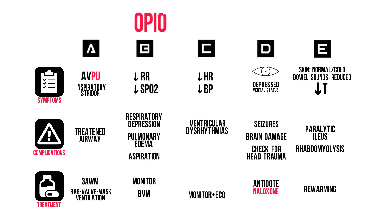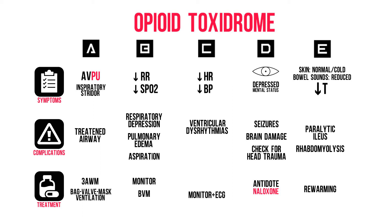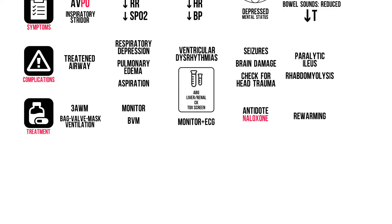Beware of transcellular shifts of potassium when you do so. Through our ABCDE assessment, we figured out that this is an opioid toxidrome. All vitals are downregulated, and the patient has pinpoint pupils. We can thus anticipate for possible complications, like respiratory depression and brain damage. We should therefore get the appropriate blood work: an arterial blood gas, liver and renal panel with electrolytes, CK, etc. Don't forget the tox urine. We've also already started the appropriate supportive treatment, providing respiratory support and rewarming the patient. Move on to risk assessment — can the patient tell you what he took, when, etc.?